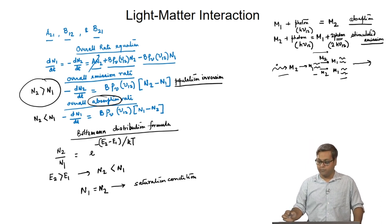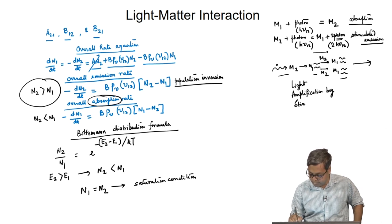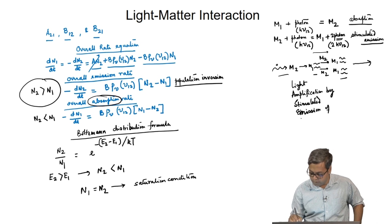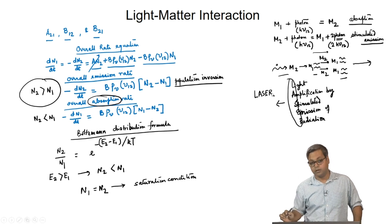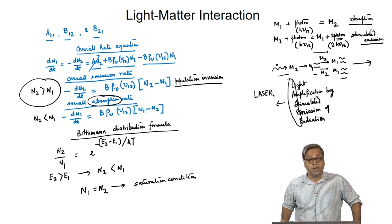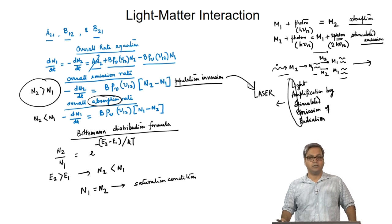Thus, we can have Light Amplification by Stimulated Emission of Radiation. Taking the first letters, what we get is LASER. One has to keep in mind that the condition of population inversion is the necessary condition for laser.